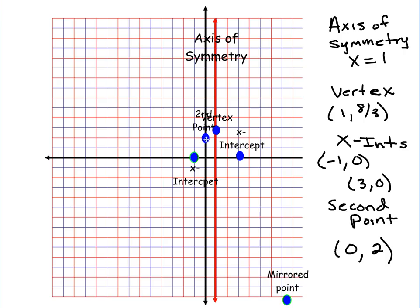Then I'm going to mirror that over, just like I did all the rest of them. So one that way, one this way. Put that point right there. And now that I've graphed all my points, I can make the curve, which gives me my parabola. And that is how you graph a quadratic equation in the intercept form.